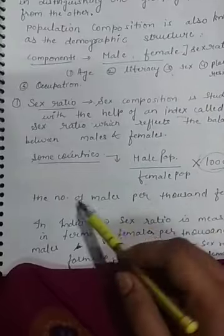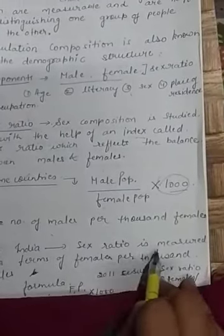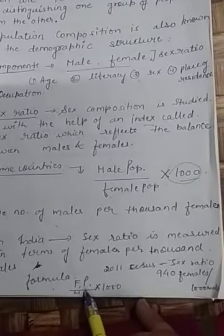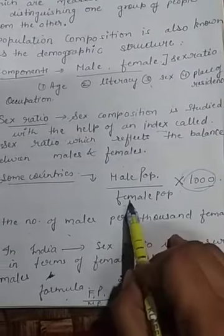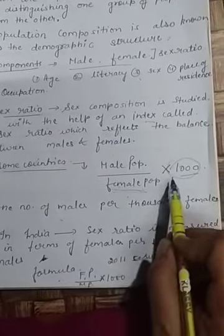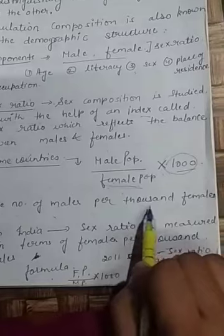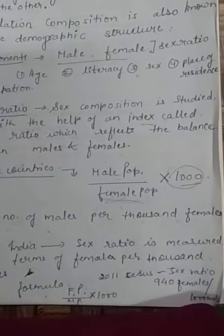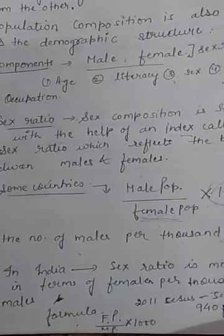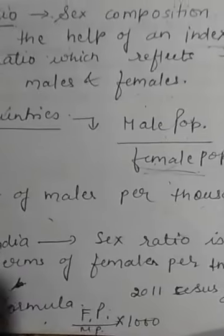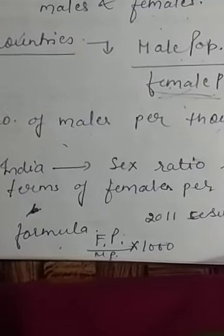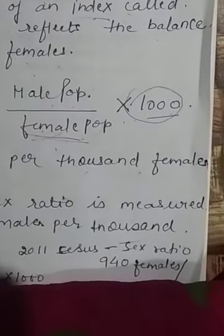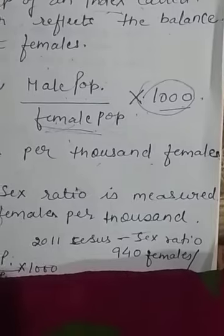In India, sex ratio is measured in terms of females per thousand males. The formula used is: Female Population divided by Male Population, multiplied by 1000. You can see the formula written here. According to the 2011 census, India's sex ratio was 940 — meaning 940 females per thousand males.